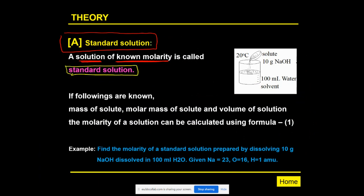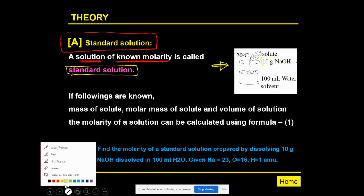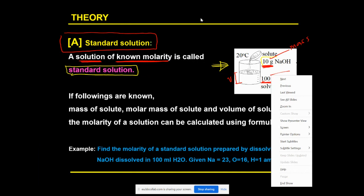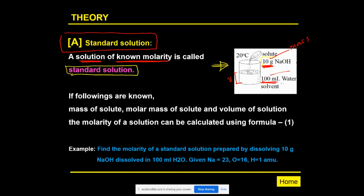For example, here we have prepared a solution at room temperature (20°C). The solute is sodium hydroxide (NaOH) — we are using 10 grams of it — and the total volume of the solution is 100 mL. So 10 g is the mass and 100 mL is the volume V.